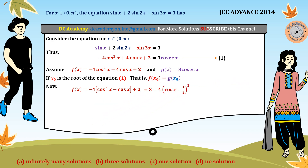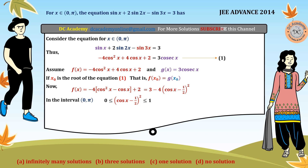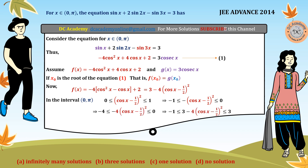On the interval (0, π), cos x lies between −1 and 1, so (cos x − 1/2)² always lies between 0 and 1. Multiplying by −4 flips the inequality, giving −4(cos x − 1/2)² ∈ [−4, 0]. Adding 3, we find that f(x) lies between −1 and 3. So the range of f(x) is [−1, 3].